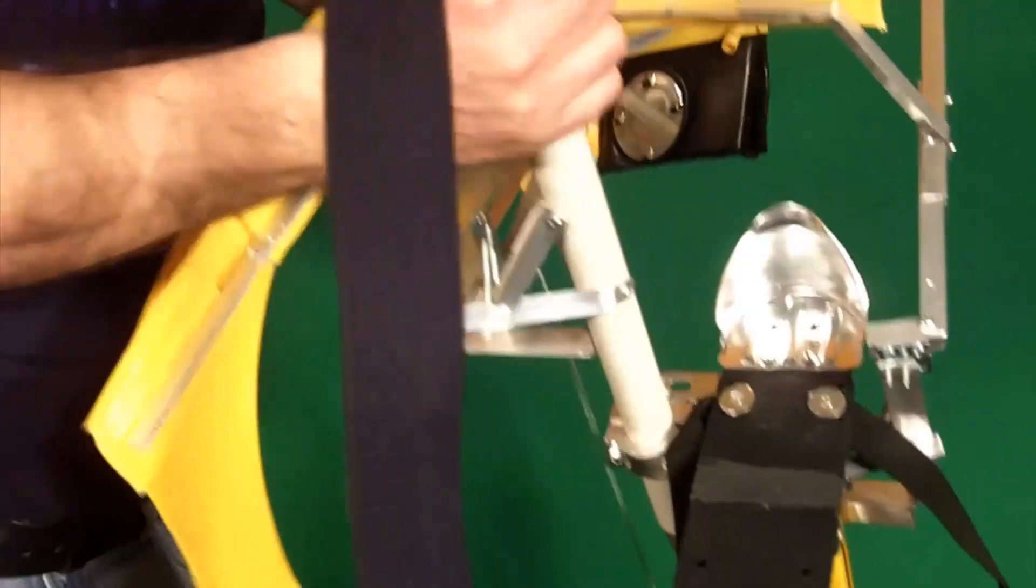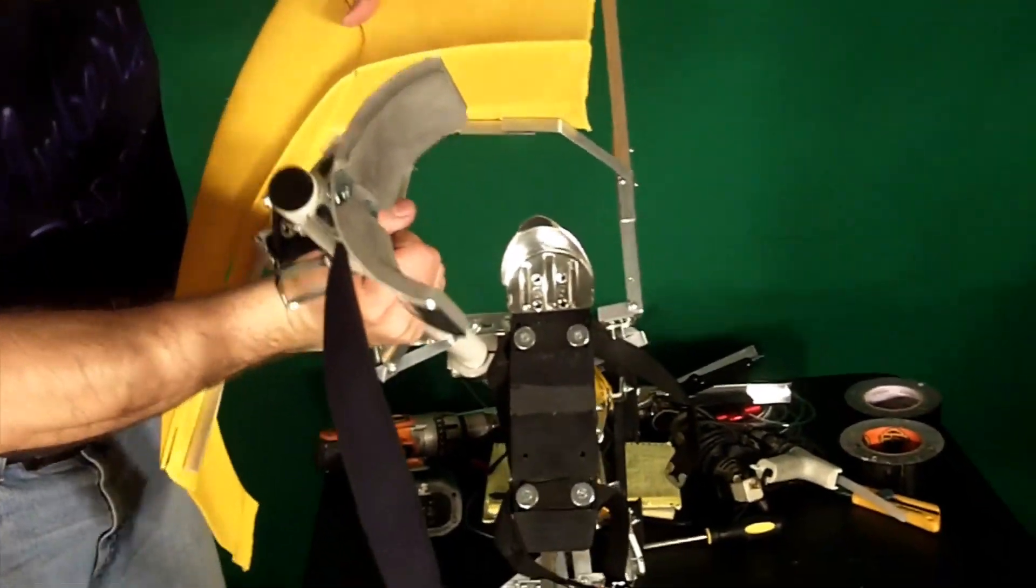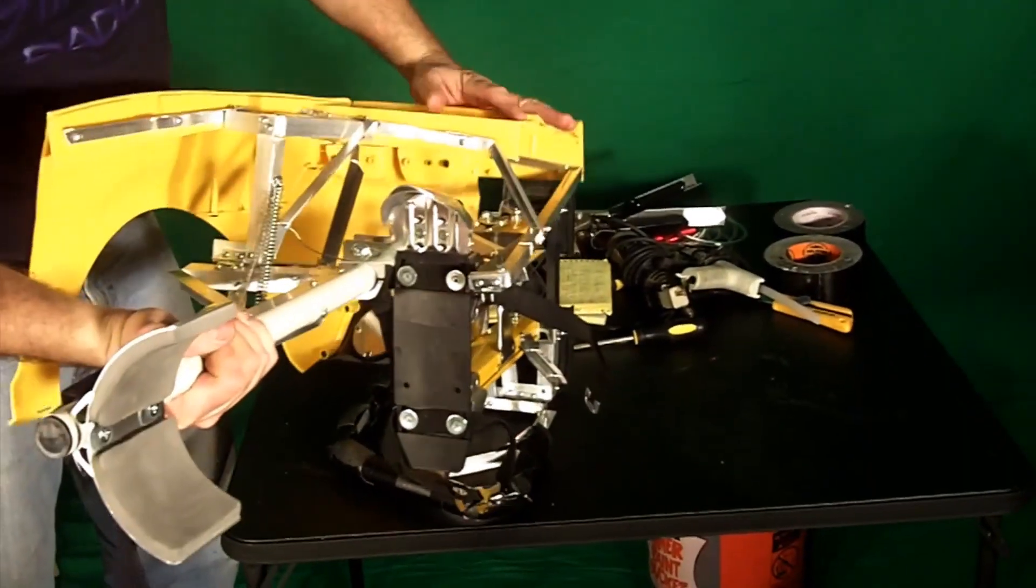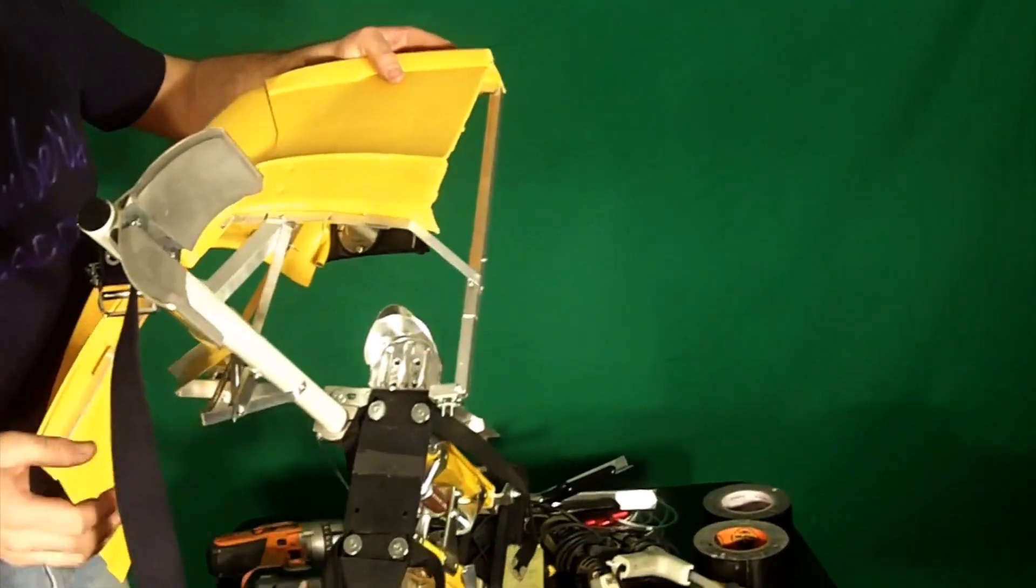When the leg goes up, it wraps around where my leg fits when it's in robot mode. When it drops down, at no point does that ever hit where my leg is. And of course I'll have more stuff to fill in.